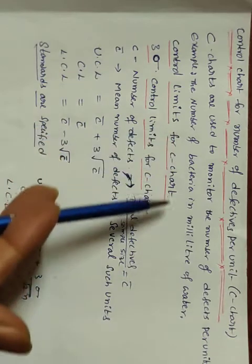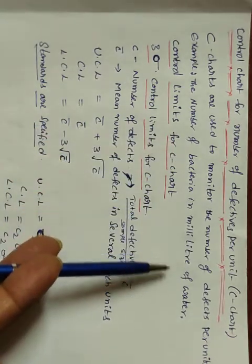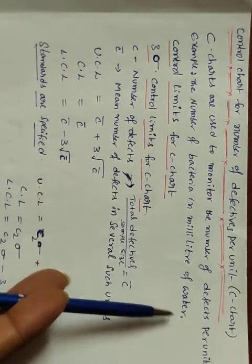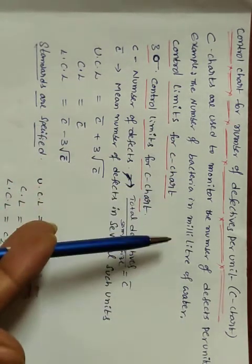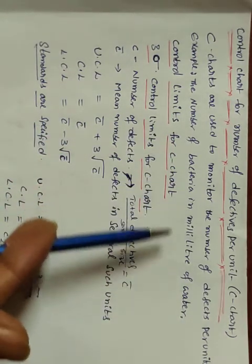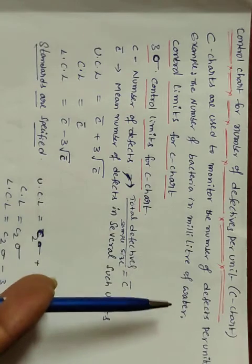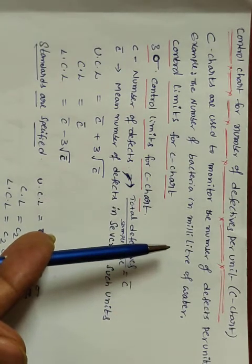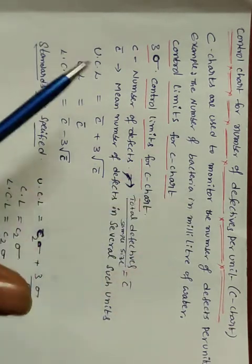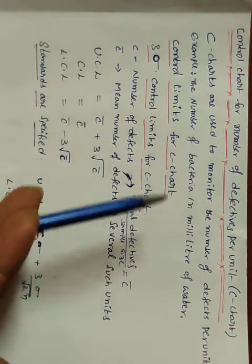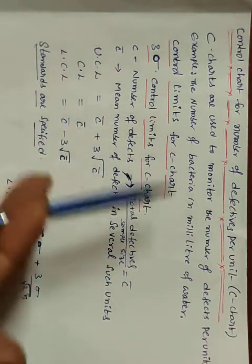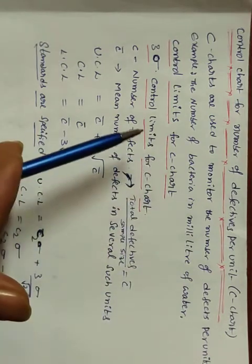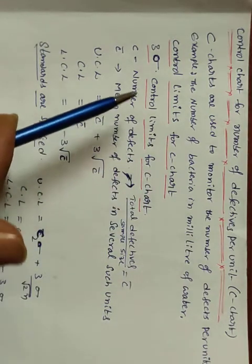Example: the number of bacteria in one milliliter of water. How many bacteria are present in one milliliter of water? Whether that is under control or out of control — we use a C chart for this.